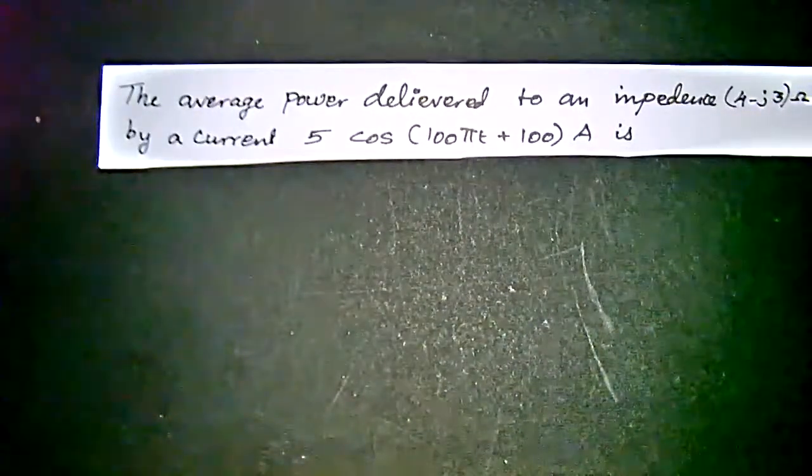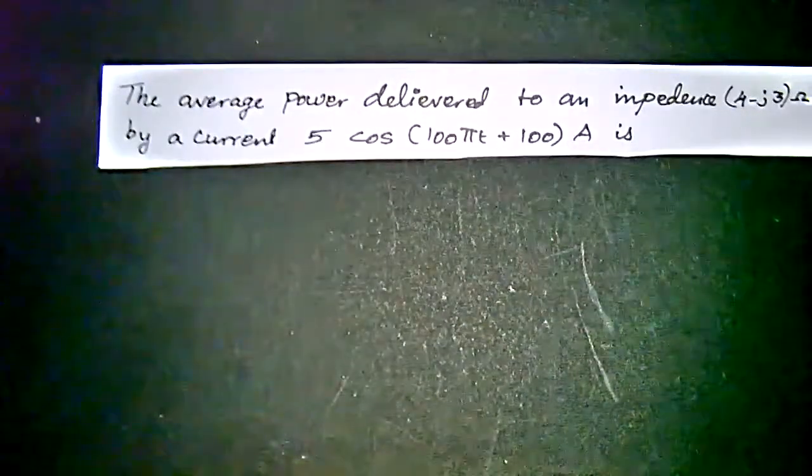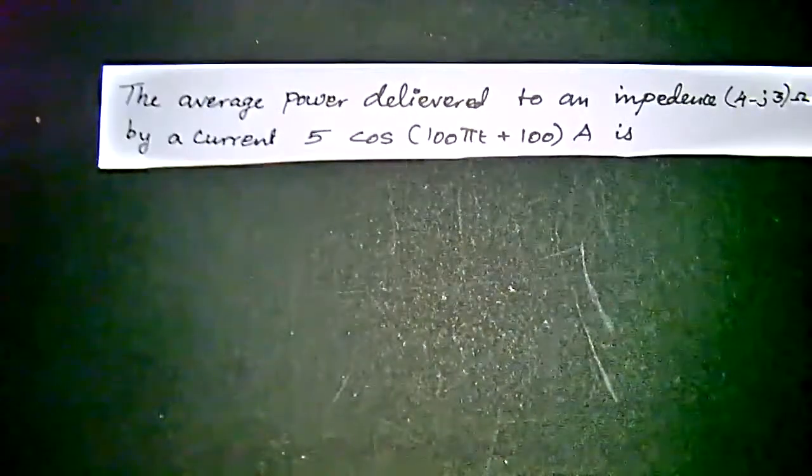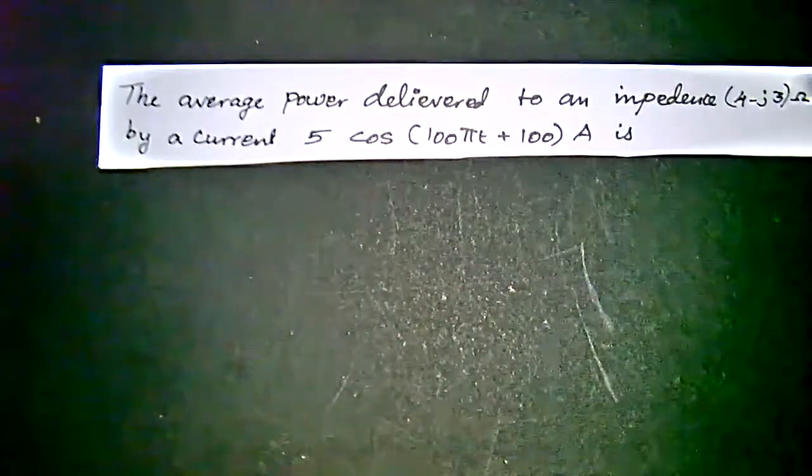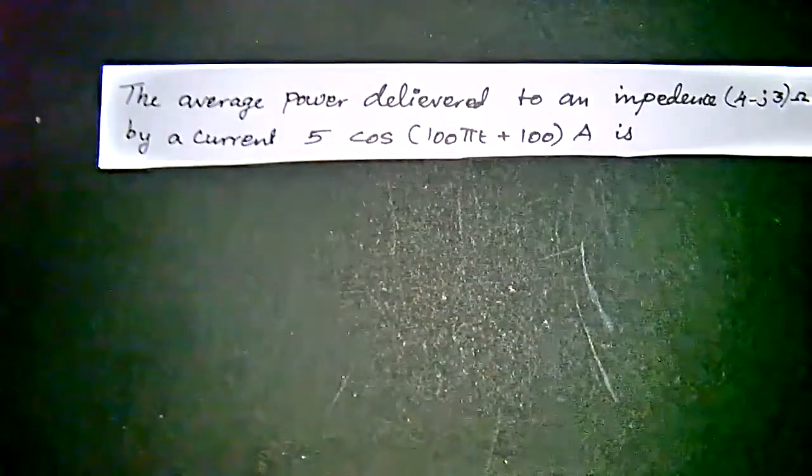Power can be rewritten as P equal to VI. From that VI we have to apply Ohm's law to remove that voltage and we will get the I and R equation.